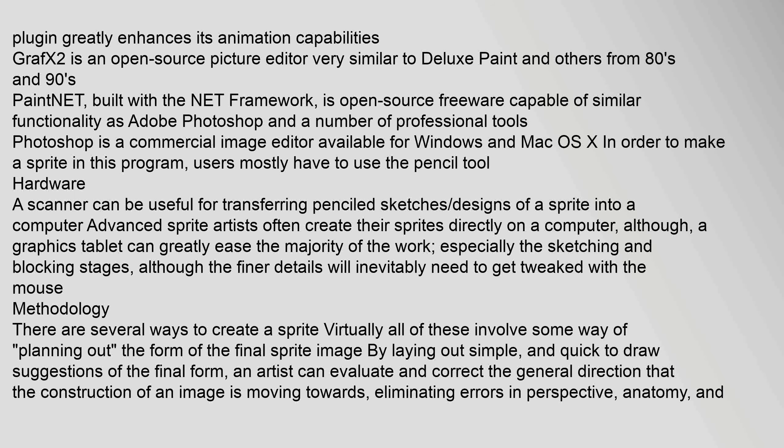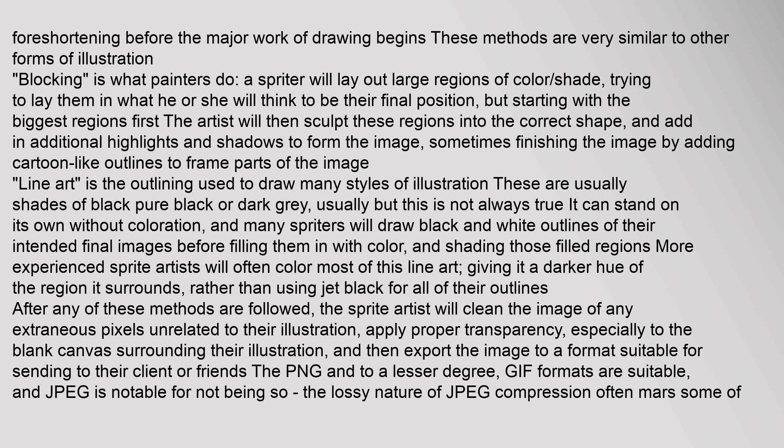There are several ways to create a sprite. Virtually all of these involve some way of planning out the form of the final sprite image by laying out simple and quick-to-draw suggestions of the final form. An artist can evaluate and correct the general direction that the construction of an image is moving towards, eliminating errors in perspective, anatomy, and foreshortening before the major work of drawing begins. These methods are very similar to other forms of illustration. A spriter will lay out large regions of color and shade, starting with the biggest regions first, then sculpt these regions into the correct shape.